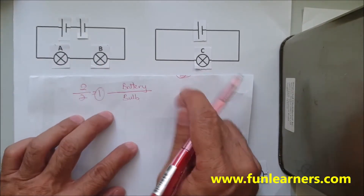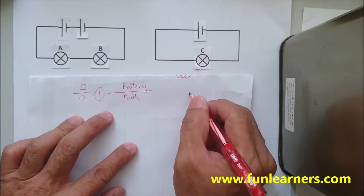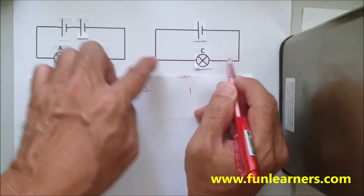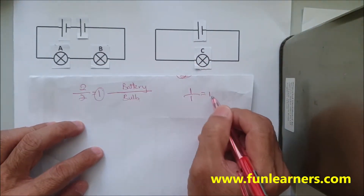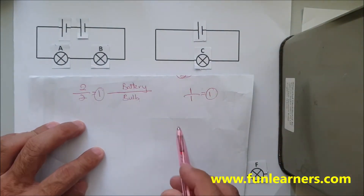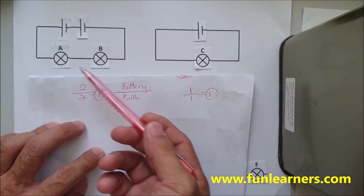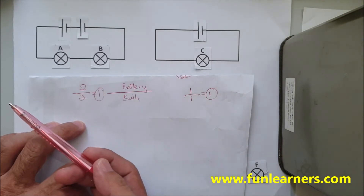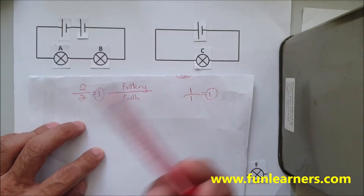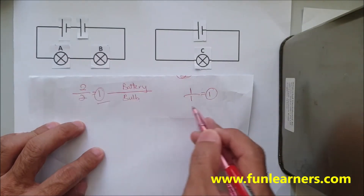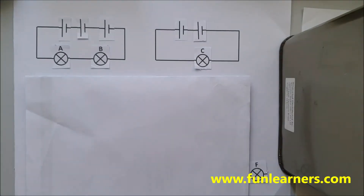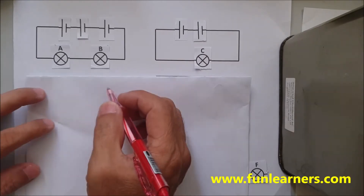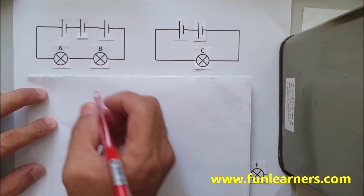Now for the other circuit: one battery encompasses one light bulb, so this is also one. Who is brighter? We can't say any one is brighter because they are all the same brightness — A, B, and C all have brightness of one.